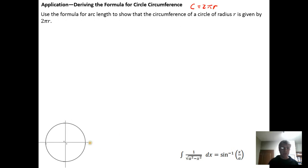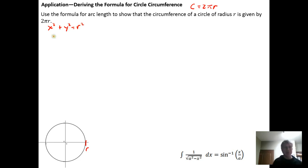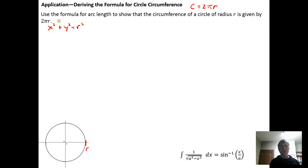If we have a circle of radius r, the relationship that describes the circle is x squared plus y squared equals r squared.